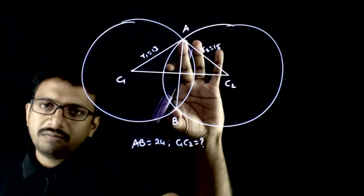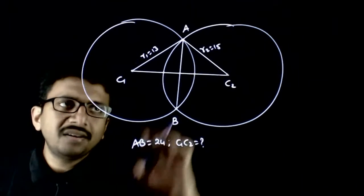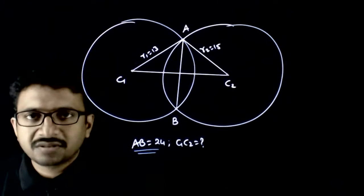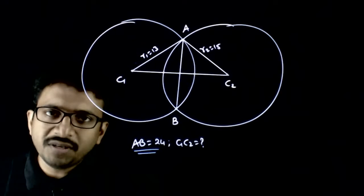And the length of the common chord—these two circles are intersecting each other—the length of the common chord is given as 24 centimeters.